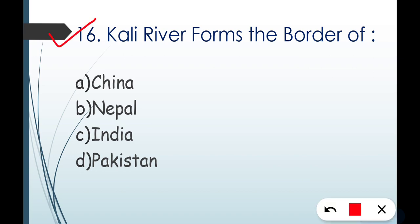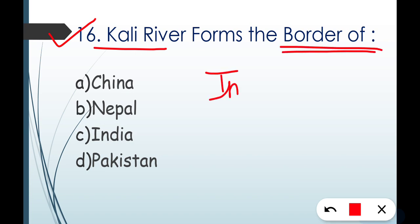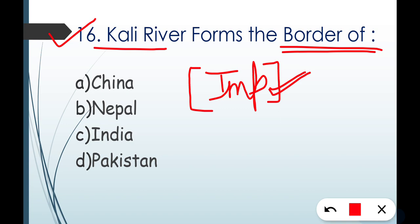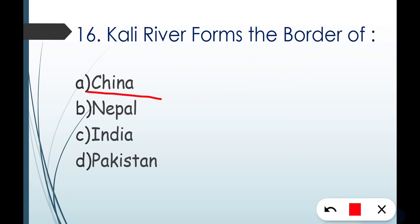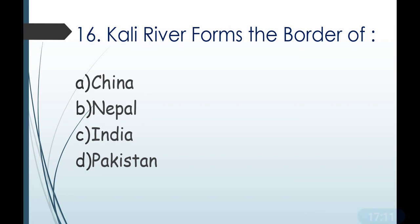Question number sixteen: Kali River forms the border of which countries? This was in the news, so it's an important question. The correct answer is Nepal and India — the two countries separated by the Kali River. There was a notable Kali River dispute between India and Nepal, which makes this question especially important.